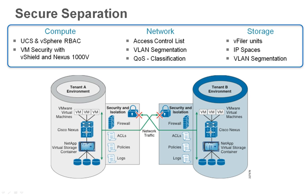Secure separation is defined as disallowing control or data from moving between two tenant environments. It is enforced at every layer. At the compute layer, control of the UCS and vCenter are governed by role-based access control, and VMs are protected by vShield and Nexus 1000v policies. At the network layer, ACLs, VLAN segmentation, and QoS classification provide strong separation of tenant networks.